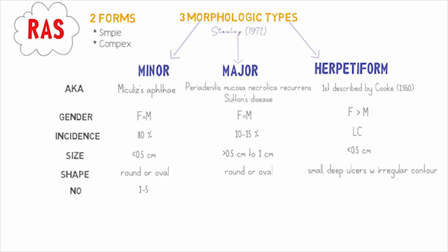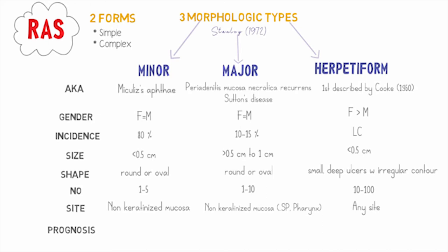Minor RAS are usually 1 to 5 in number; major RAS are 1 and never more than 10; herpetiform are 10 to 100 in number. Minor and major RAS are both usually seen on non-keratinized mucosa, but the major form may also involve the soft palate and pharynx, whereas herpetiform can be found anywhere. For prognosis, minor RAS heals within 1 to 2 weeks without scarring; the major form heals within 4 to 6 weeks and may leave scars; herpetiform usually heals within up to 1 month with no scarring.